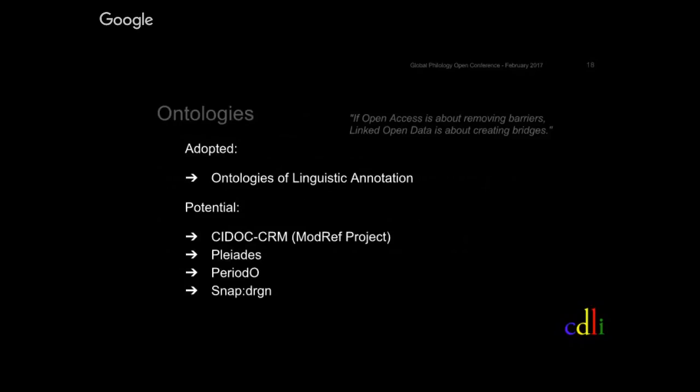Additionally, the CDLI will take the linked open data plunge. Linked open data will be an integral part of all future research projects of the CDLI. The first step will be linking textual information, integrating the Open Linguistic Annotation ontologies (OLEA) with linguistic annotations, and semantic information from the text with widely used ontologies such as Pleiades for places, Periodo for periods, and SNAP:DRGN for relationships between ancient people. In a second step, metadata will also be aligned with the CIDOC CRM. The goal of the linked open data integration is to standardize results to permit interoperability with other projects.